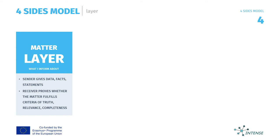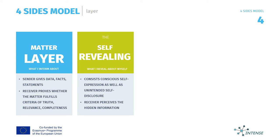What are our four layers? First, the layer of matter, or factual information — that means data, facts, and statements. The receiver evaluates whether the matter fulfills the criteria of truth, relevance, and completeness. If a statement is true, relevant, and complete, it fulfills the criteria for a good message on the layer of factual information. Second, the layer of self-revelation — this consists of an expression as well as a disclosure of the feelings and moods of the sender.